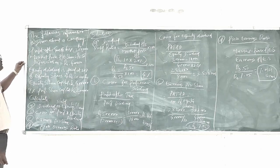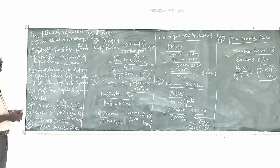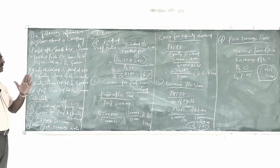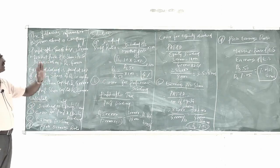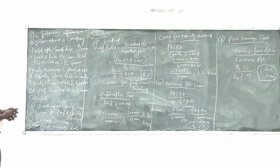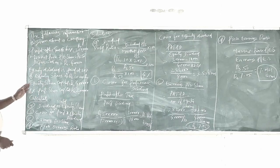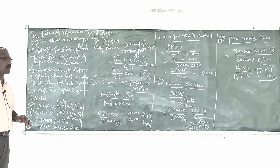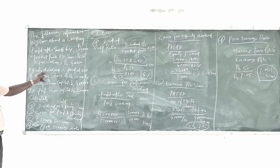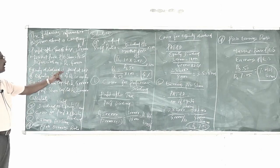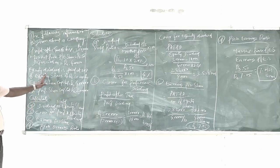The following information is given about a company. Profit after tax at the rate of 60% is equal to 3 lakhs — after paying tax at the rate of 60%, the profit after tax amounts to 3 lakhs. Market price per equity share is Rs. 50. Depreciation is equal to Rs. 40,000. Equity dividend is paid at the rate of 20% on equity shares of Rs. 10 each.